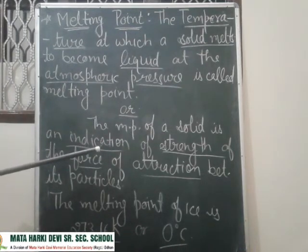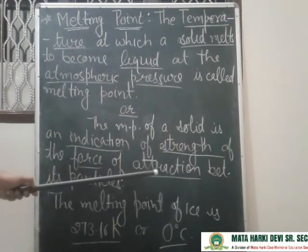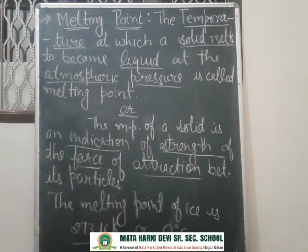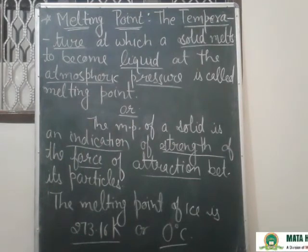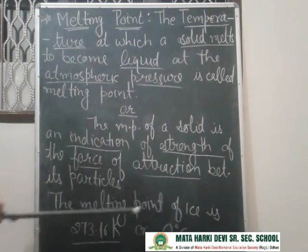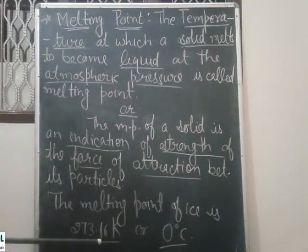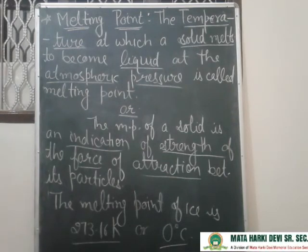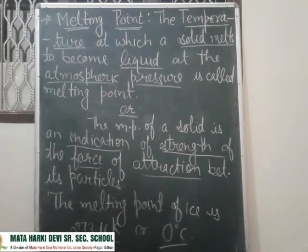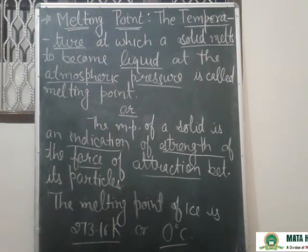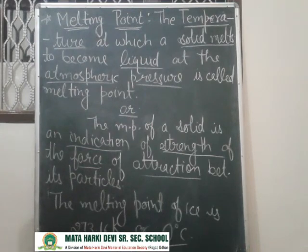दूसरी language में: The melting point of a solid is an indication of the strength of the force of attraction between the particles — कि उसके particles किस strength से आपस में जुड़े होए हैं। Melting point of ice is 273.16 Kelvin, or 0 degree Celsius. इन दोनों का conversion आपको next lectures में पढ़ाया जाएगा। Okay class, thank you very much.